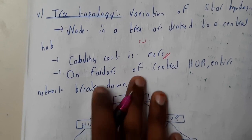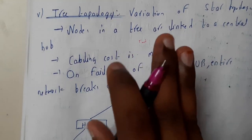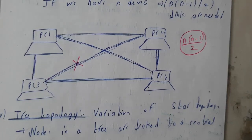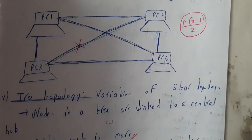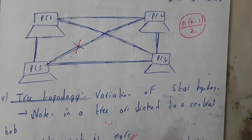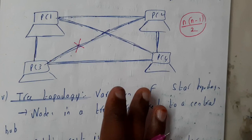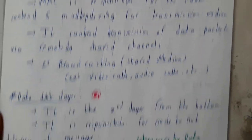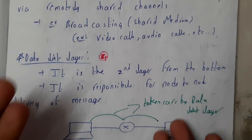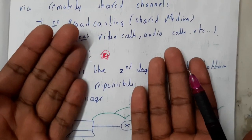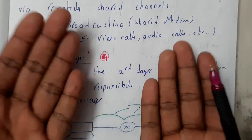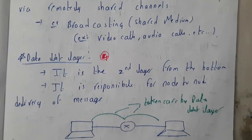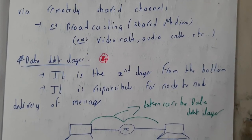So we have discussed five different types of topologies: bus topology, ring topology, star topology, mesh topology, and tree topology. In the next tutorial we will go through the data link layer. Whenever you transmit data from one device to another, the data link layer is responsible for transferring that data. We will cover that in the next lecture. Thanks for watching.